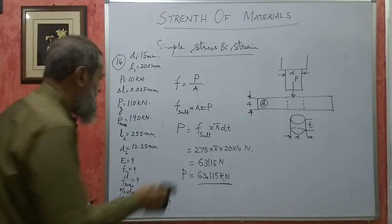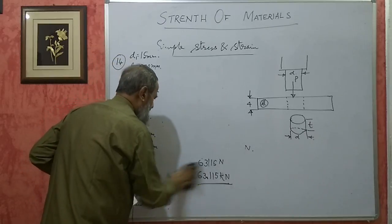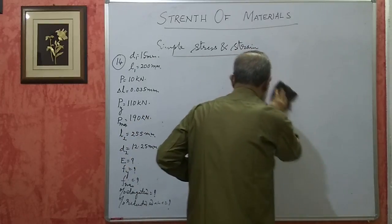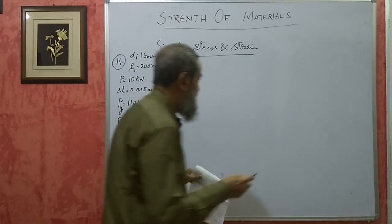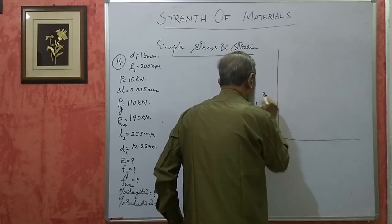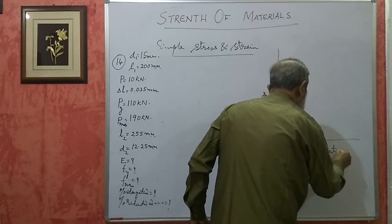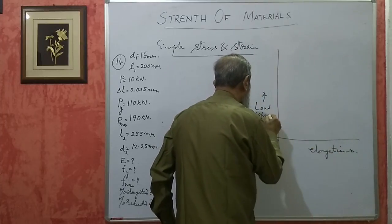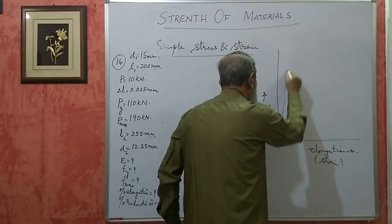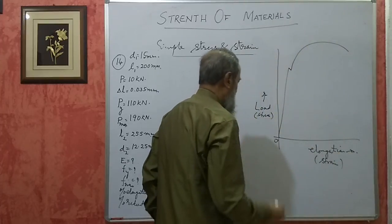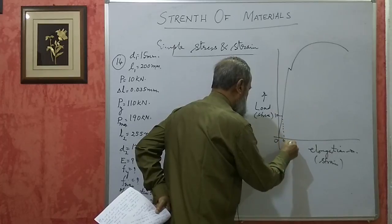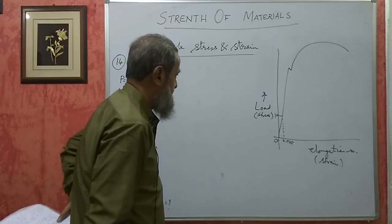To understand it better, I will draw a stress-strain diagram — I already drew it once in the previous clip. The stress-strain diagram is a load versus elongation graph. When the load is 10 kN, the extension was 0.035 mm, which is within elastic limit. The yield point is where the load is 110 kN, and maximum stress corresponds to 190 kN.